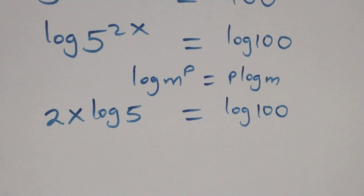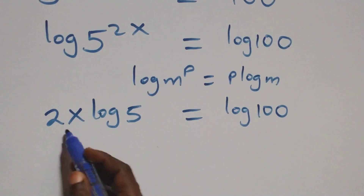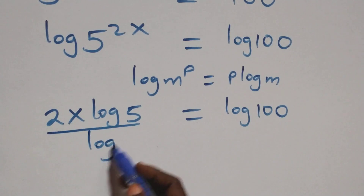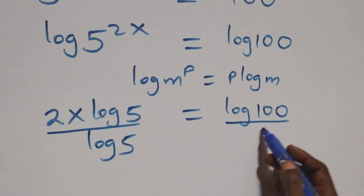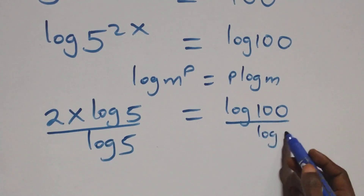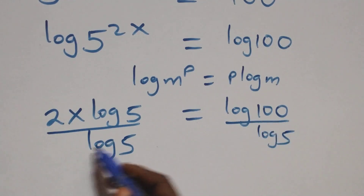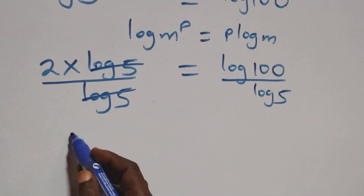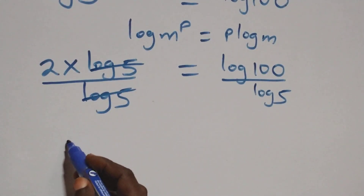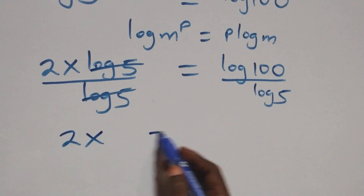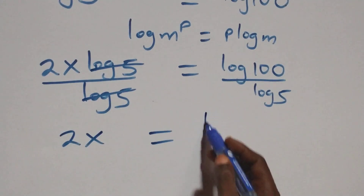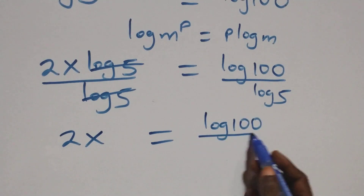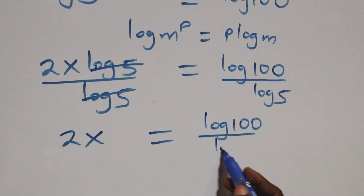Next step: we divide both sides by log 5. Log 5 cancels on the left-hand side, and we have 2x equals log 100 over log 5.